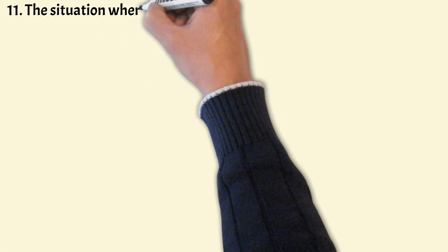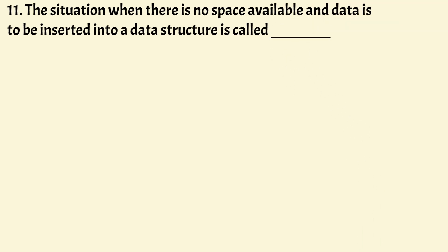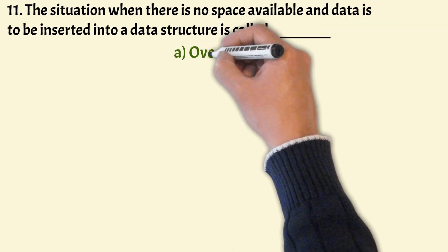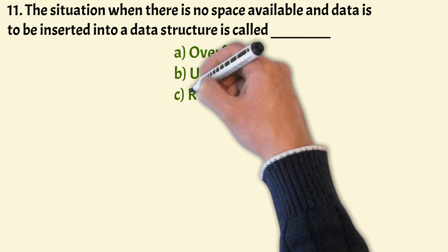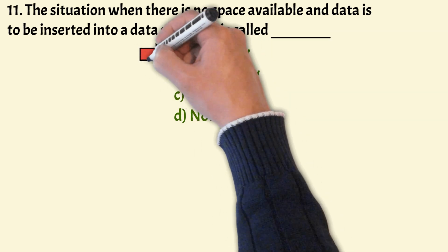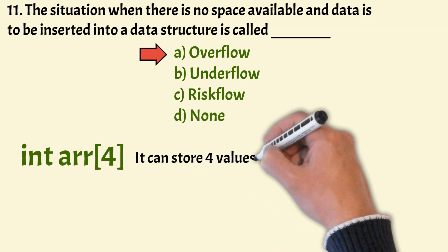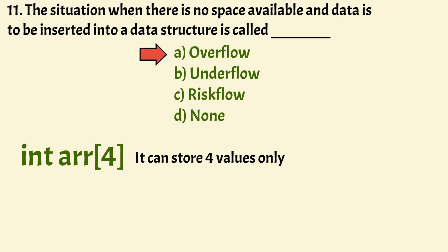The next question: the situation when there is no space available and data is to be inserted into the data structure is called? The options are: overflow, underflow, risk flow, none. The correct option is Option A, that is overflow. When new data is to be inserted into the data structure but there is no available space, this situation is called overflow. For example, if there is an array of size 4, it can store 4 values only, and beyond that there is no blank space to store any more values — this is called the overflow situation.